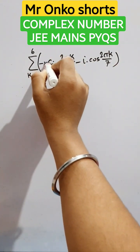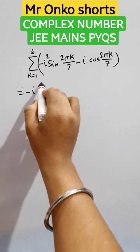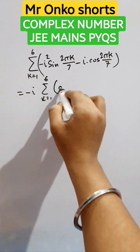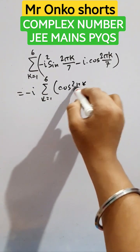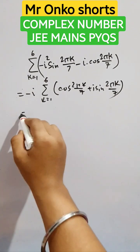First manage this as minus i squared, this is 1. So we can take minus 1 common from here. So it will be summation 1 to 6 of cos 2 pi k by 7 plus i sin 2 pi k by 7.